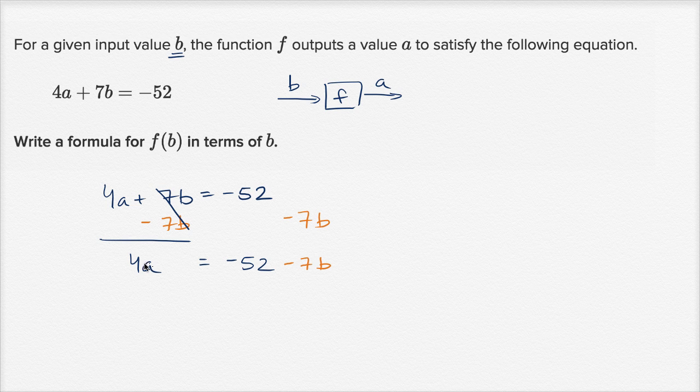Now to isolate the a here, to just have an a here instead of a 4a, we can divide both sides by four.